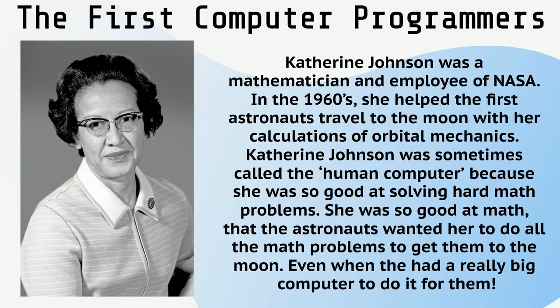Katherine Johnson was a mathematician and employee of NASA. In the 1960s, she helped the first astronauts travel to the moon with her calculations of orbital mechanics. Katherine Johnson was sometimes called the human computer because she was so good at solving hard math problems. She was so good at math that the astronauts wanted her to do all the math problems to get them to the moon, even when they had a really big computer to do it for them. Wow, that's pretty cool.